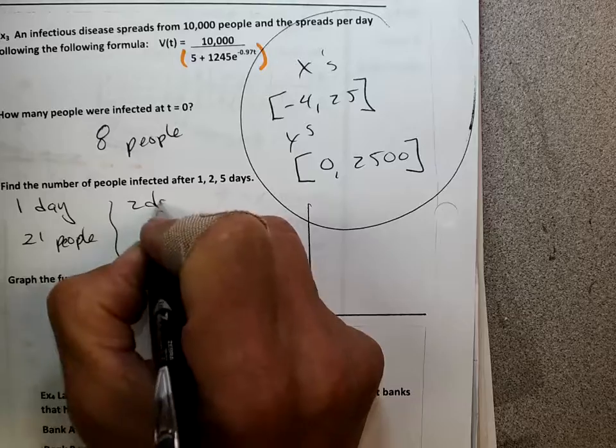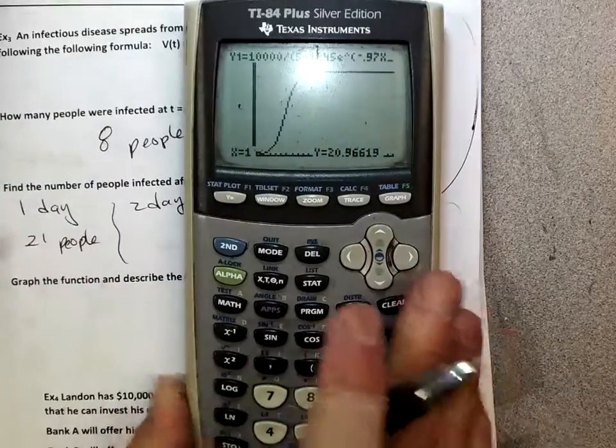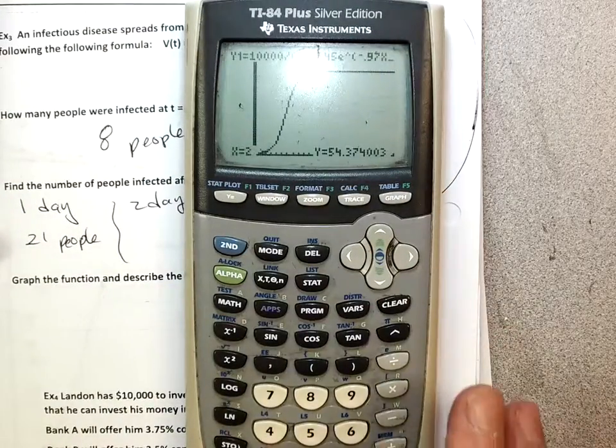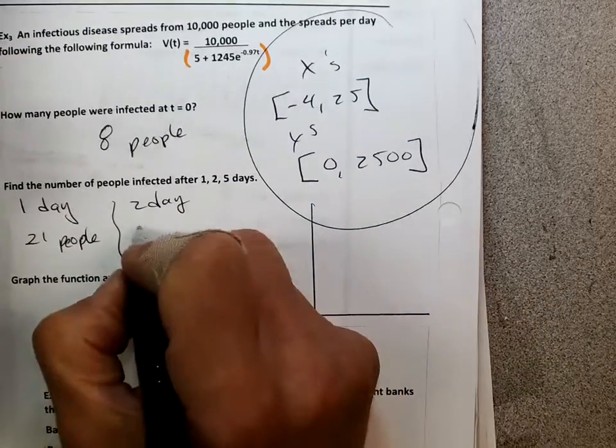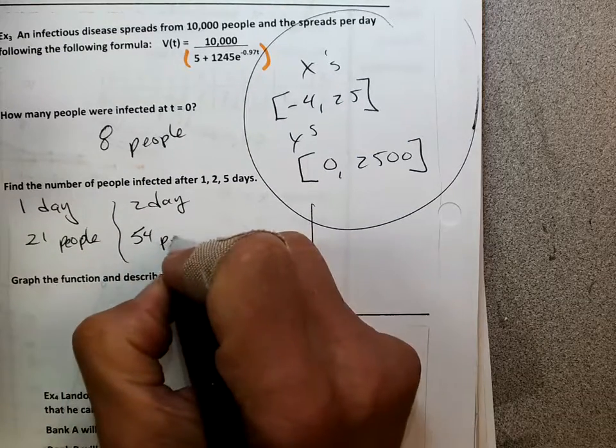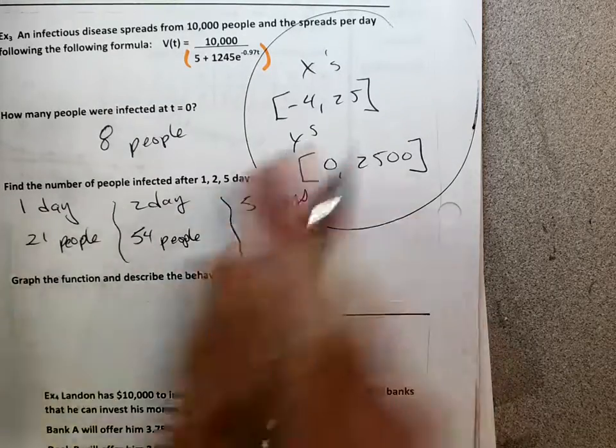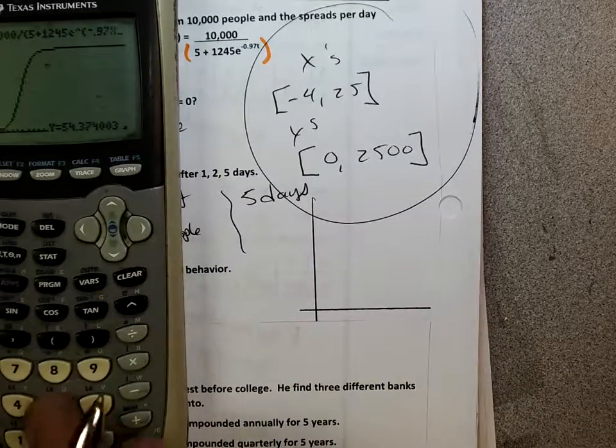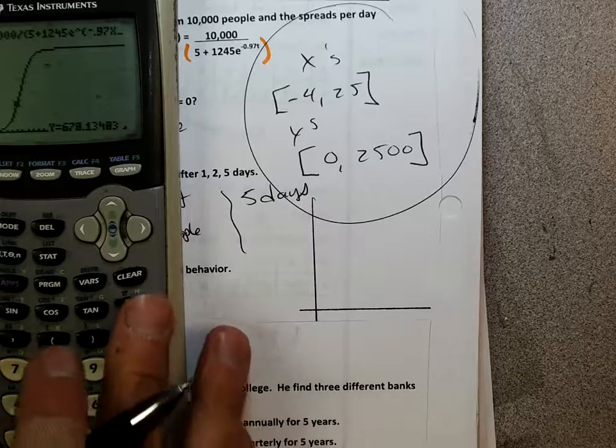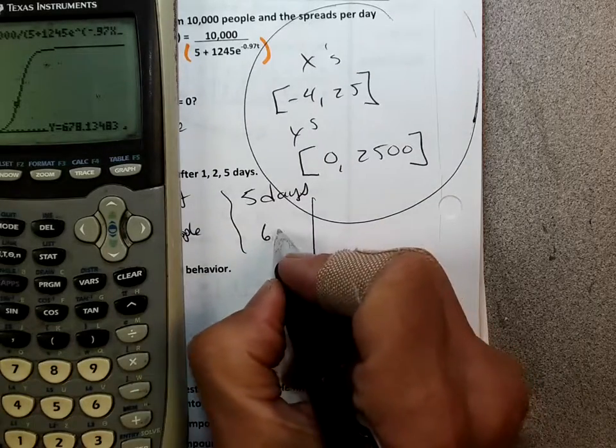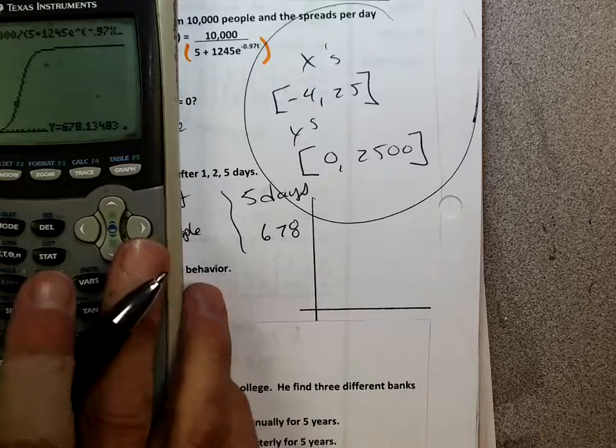After two days, let's check it out. Trace. Two. Fifty-four people. And after five days, probably, it's 678. So, people are getting sick. Aren't they fast?